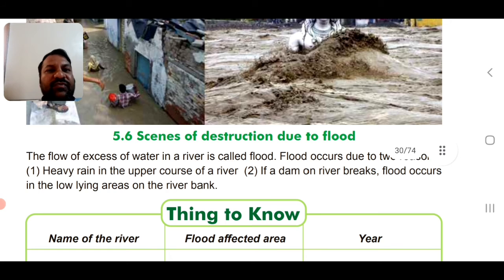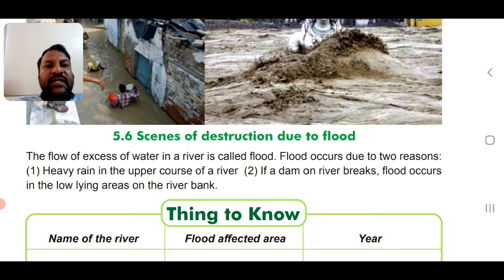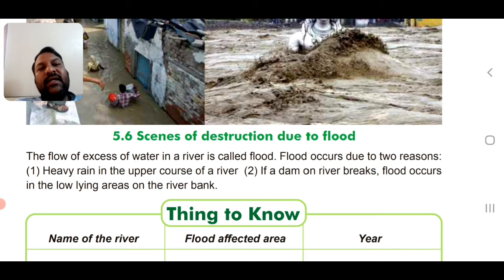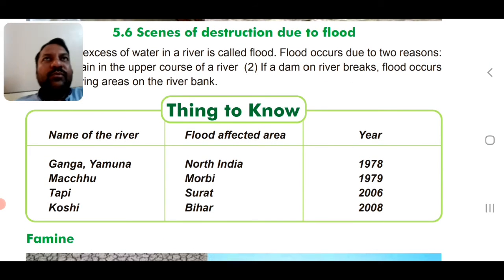Now let's move to floods. The flow of excess water in a river is called a flood. It happens due to heavy rain in the upper course of the river, or if a dam on the river breaks. Floods occur in low-lying areas on the river bank. An example is the Tehri Dam in Himachal, where the whole city was destroyed.